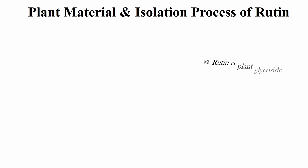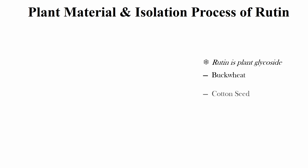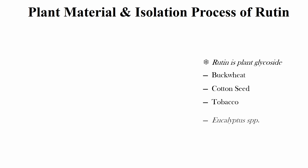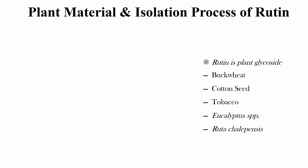Rutin is a plant glycoside. It is found in buckwheat, cotton seed, tobacco, eucalyptus species, and Ruta chalepensis.